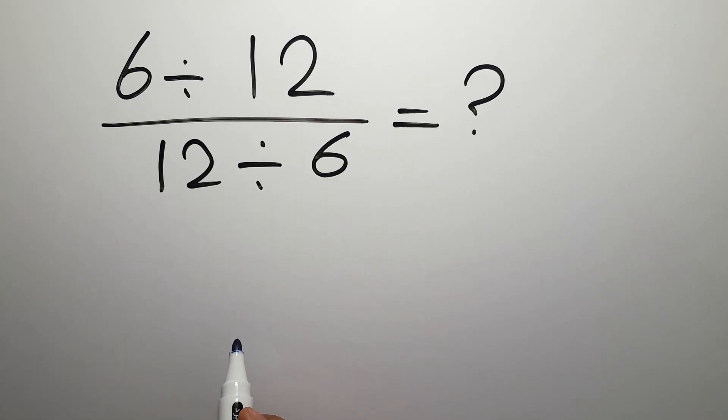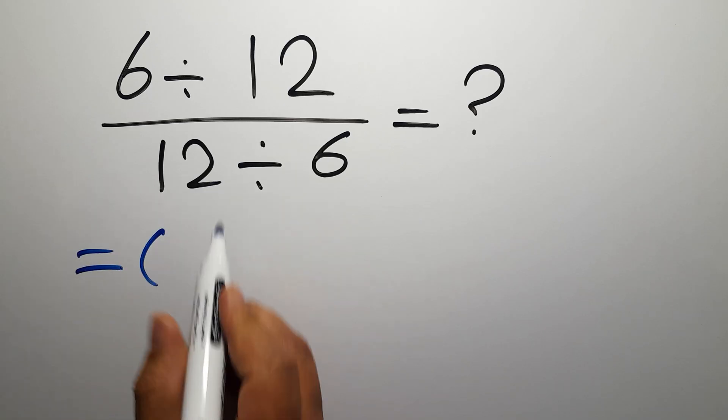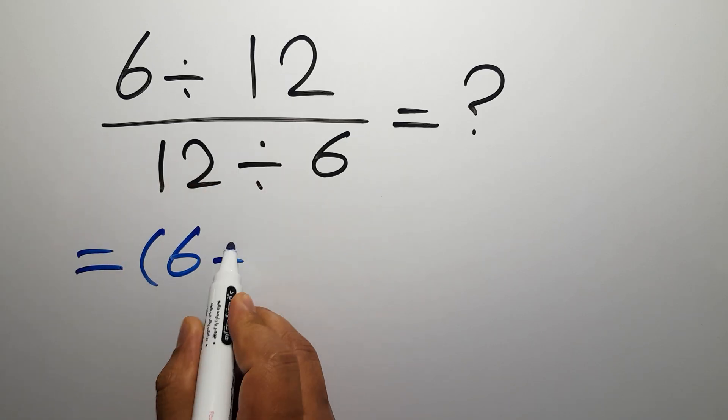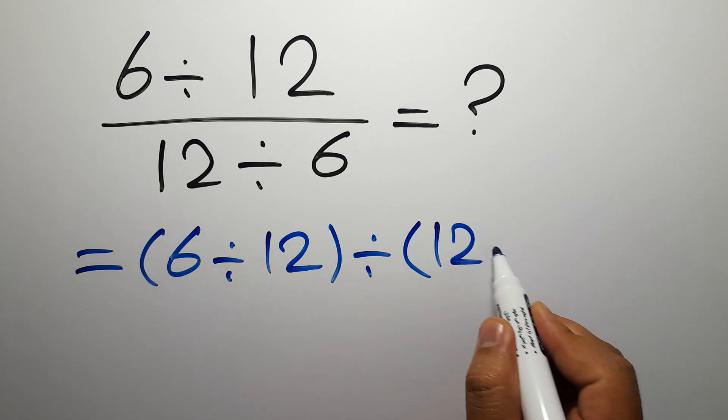Are you ready to solve? Let's go down and start it. Instead of this fraction we can write parentheses: the numerator 6 divided by 12, divided by the denominator which is 12 divided by 6.